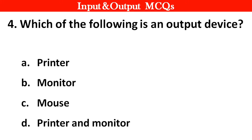Next question. Which of the following is an output device? Right answer is option D: Printers and monitor.